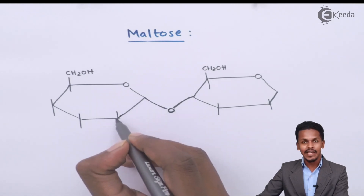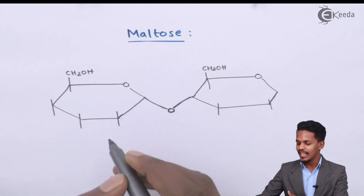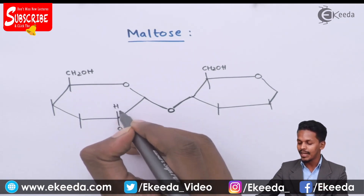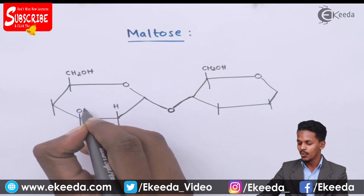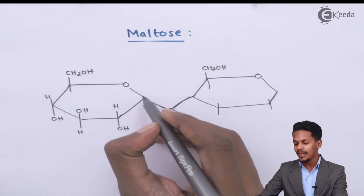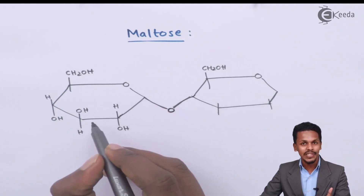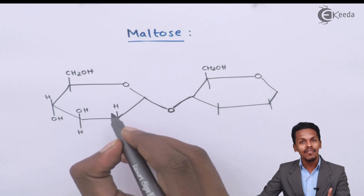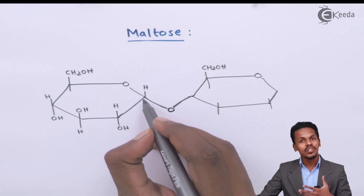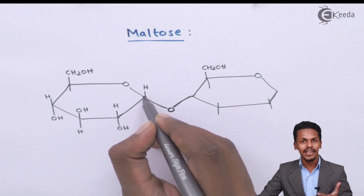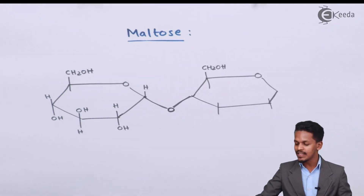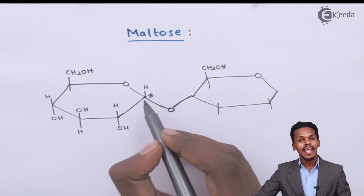Looking at carbon number two of the first unit, the OH is attached on the lower side according to the Haworth projection formula, and opposite to that is hydrogen. On the other positions: here there is hydrogen, here OH, here OH, and here H. This carbon number one is the anomeric carbon atom of alpha-D-glucopyranose. For alpha-D-glucopyranose, the H should be on the upper side and the OH on the lower side. The valency of the carbon is maintained, and this is how it forms a bond with the other alpha-D-glucopyranose. So this is the anomeric carbon.